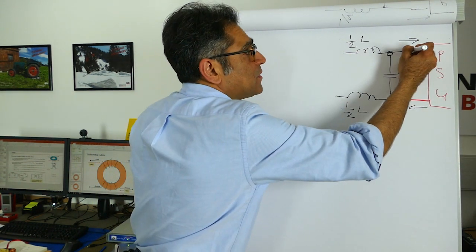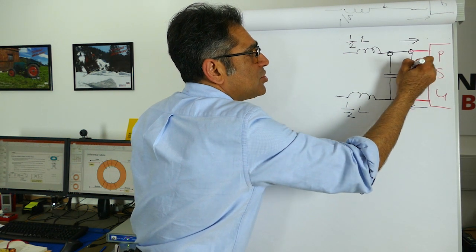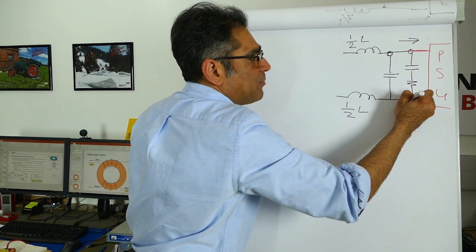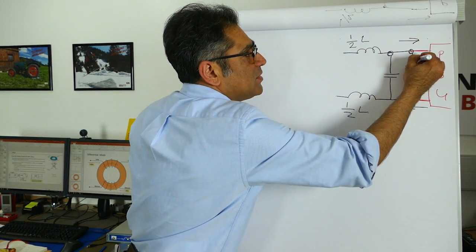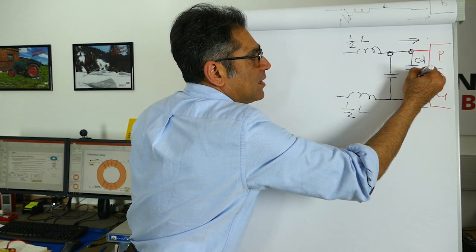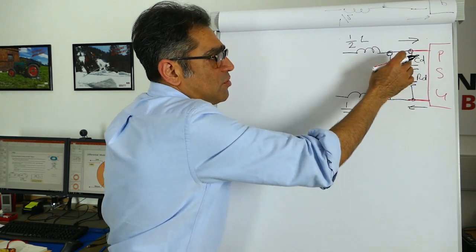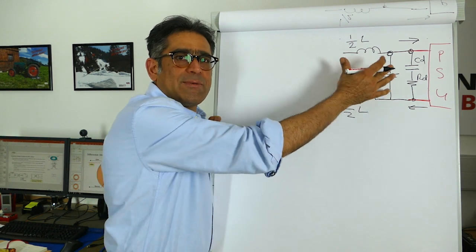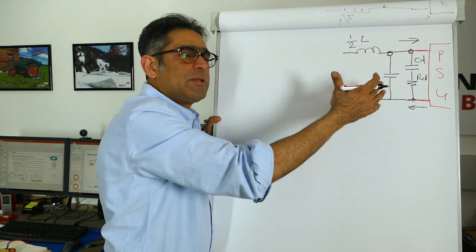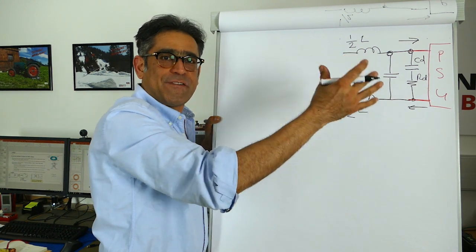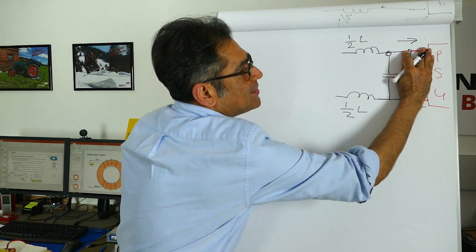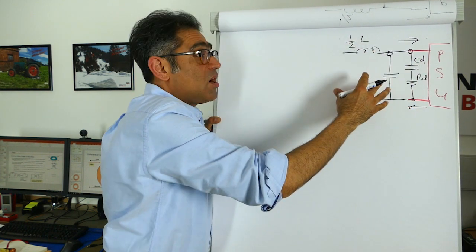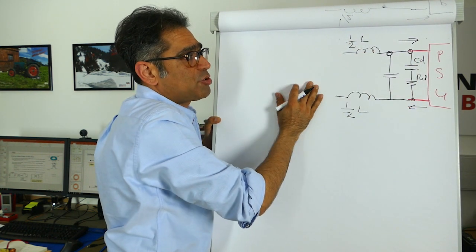In addition, often you end up having a large electrolytic capacitor plus some dampening resistor or ESR. These two, let's call this CD and RD, are there to make sure that the filter does not cause instability with the power supply according to Middlebrook's stability criteria, but we will talk about that in a different video. So for now, this is the major part that we are interested in and this part is what is filtering the differential mode noise.